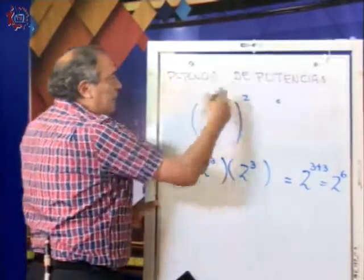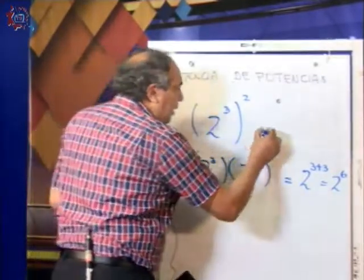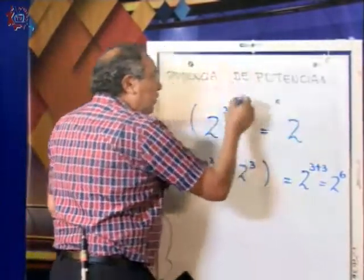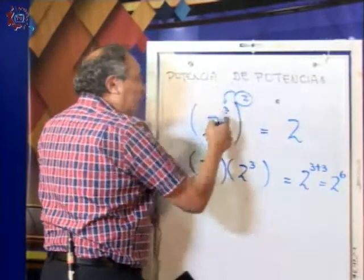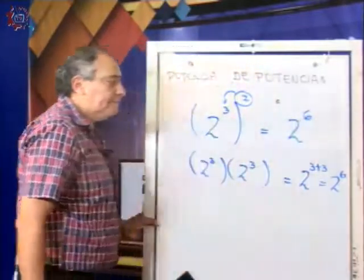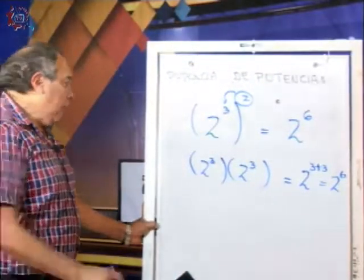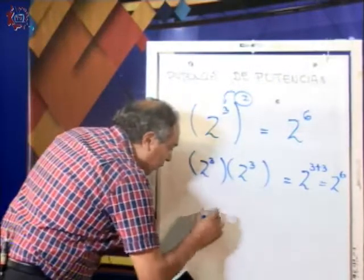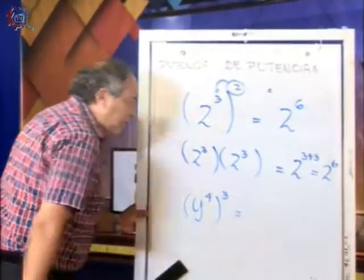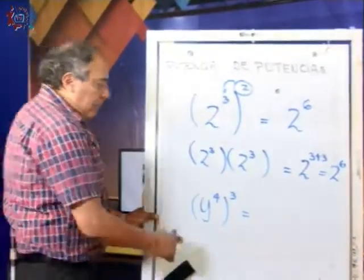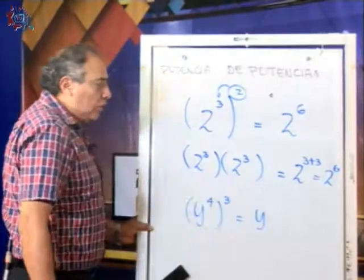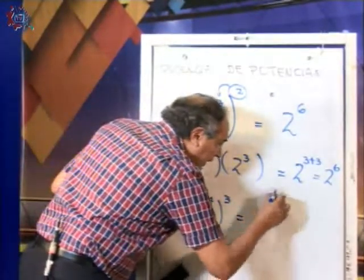Pero esta ley — potencia de potencia — nos dice: no efectúes ese desarrollo. Escribe la base y multiplica exponente por exponente: 2 por 3 nos da 6. Nuevamente, podemos tener el caso con una base que sea una letra. Aplicamos el mismo concepto: escribo la base y multiplico únicamente los exponentes. 4 por 3 me da 12.